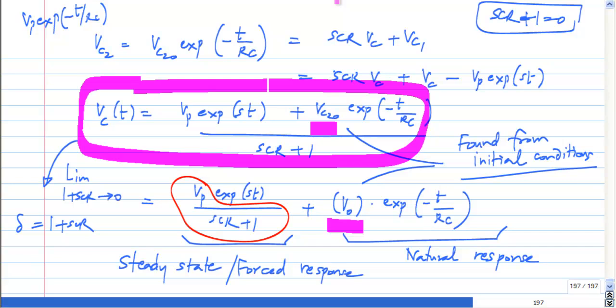So now we have solved the first order circuit for a constant input and for an exponential input. Now of course, these two are not really separate cases. If I put S equal to 0, I get the other one. That is pretty obvious. If I put S equal to 0, this bottom becomes 1 and I have Vp and V naught exponential minus T by RC. So a constant is also an exponential with this S is like a frequency, the frequency being 0.